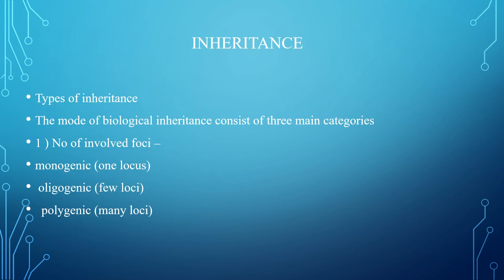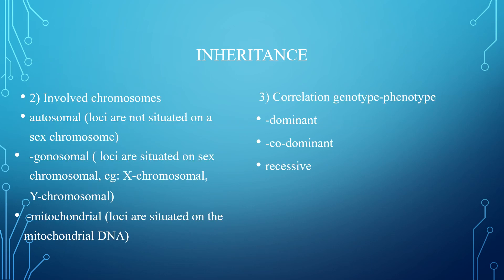Types of inheritance are mainly of three types. Number one is based on the number of involved loci, which may be monogenic (one locus), oligogenic (few foci), or polygenic (many loci). For example, a monogenic trait is cleft chin, while polygenic traits like height, skin color, and hair color involve many loci. The second type involves chromosomes: autosomal, gonosomal, and mitochondrial. Autosomal chromosomes are those other than sex chromosomes. Gonosomal are sex chromosomes, and mitochondrial DNA is mainly inherited from the maternal side. The third is the correlation between genotype and phenotype: dominant, co-dominant, and recessive.